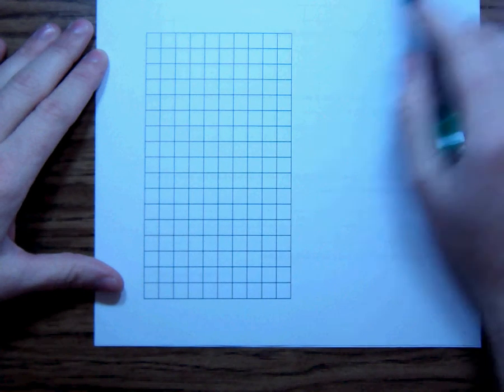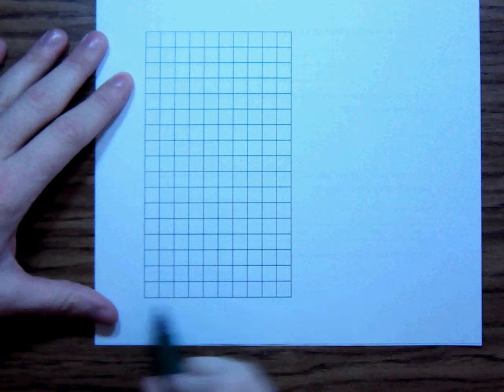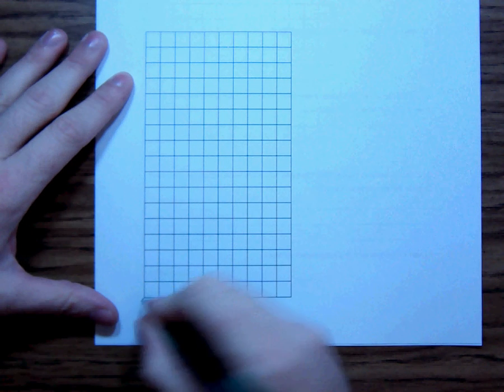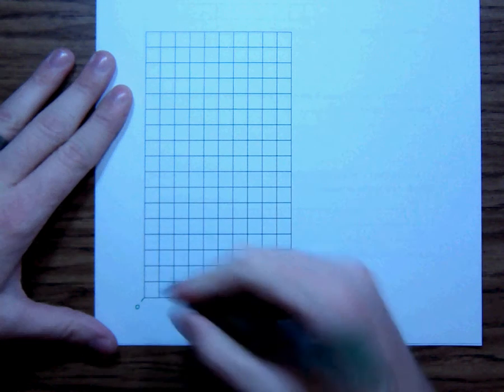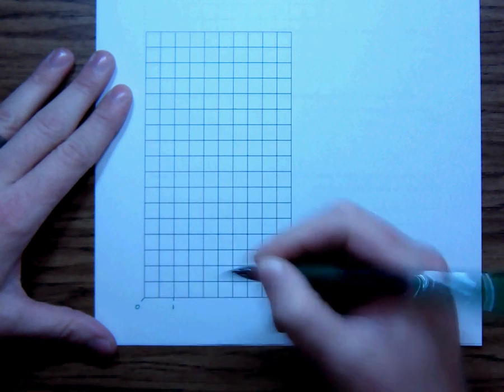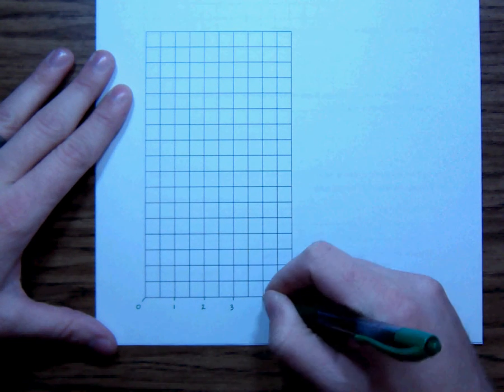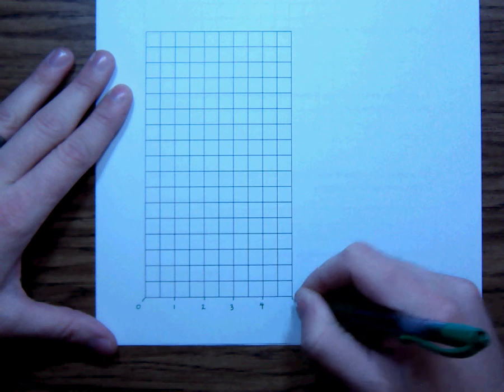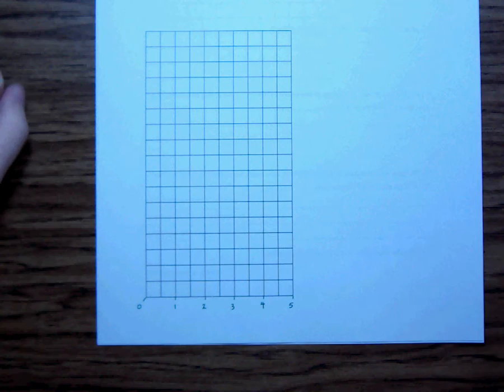Use two units on the horizontal axis to represent one hour. So what that means is, here's my horizontal axis. Remember, horizontal is left and right. That every two spaces, or two units, is one hour. So two hours, three hours, four hours, five. And that's nice, simple enough.